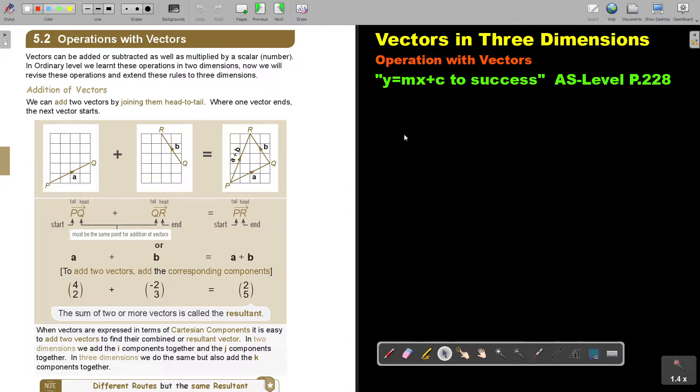Okay, let's start with operation with vectors. You will find this on page 228 in the Namibia AS level mathematics textbook Y equals MX plus C to success. Vectors can be added or subtracted as well as multiplied by a scalar, that means a number. In ordinary level, we learned these operations in two dimensions. Now we will revise these operations and extend these rules to three dimensions.